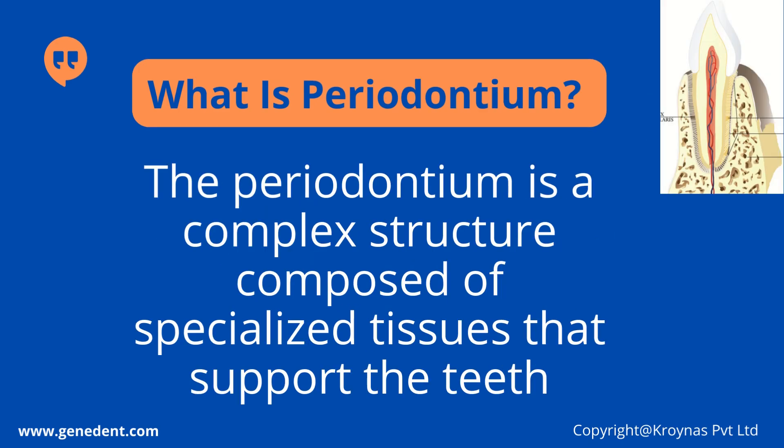The periodontium is a complex structure composed of specialized tissues that support the teeth, such as the four tissues: the periodontal ligament, the alveolar bone, the cementum, and the gingiva.